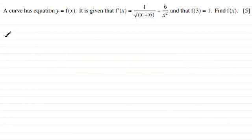Now if we're to get f of x we need to integrate what we're given. f dash x remember is the equivalent of differentiating f of x with respect to x. So I'll just copy this down first of all that we've got 1 divided by the root of x plus 6 then plus 6 over x squared.